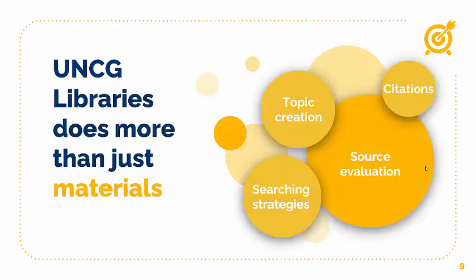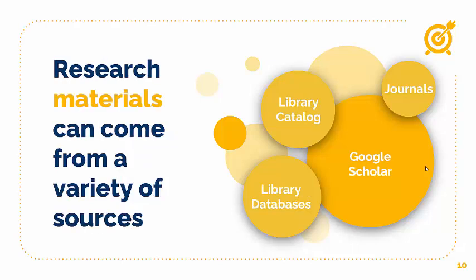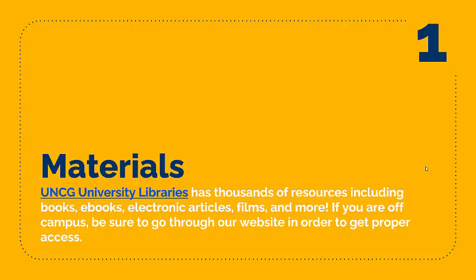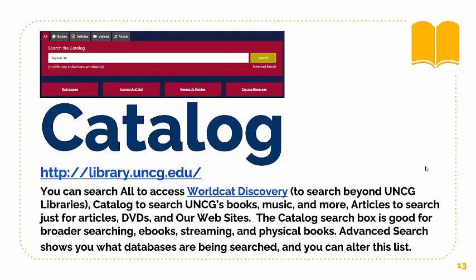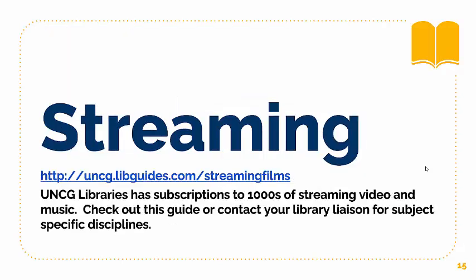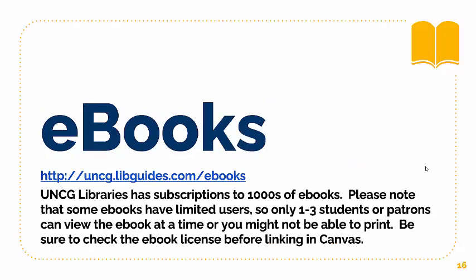UNCG Libraries does more than just materials. We have a variety of research materials in a variety of sources, and there are multiple ways you can find resources for your research. There's Google and Google Scholar, but we recommend library databases. We have databases on a variety of topics, and you can access materials from our catalog off of our main page, as well as through databases. We also have a variety of streaming films as well as ebooks.